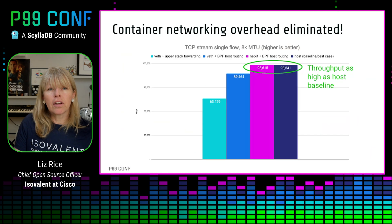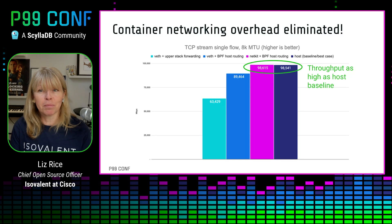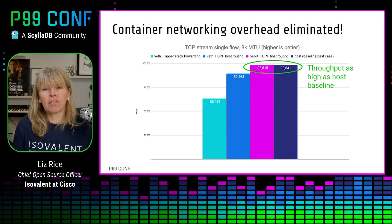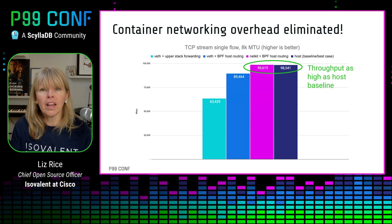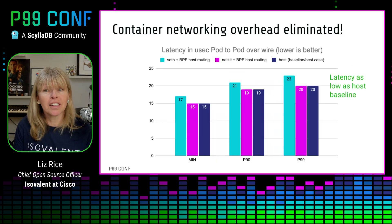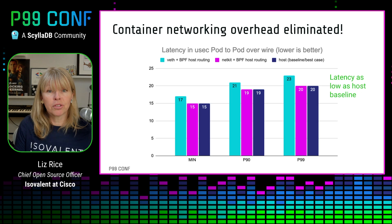If we look at the benchmark results — with no need to queue packets and no need to pass packets through that host upper networking stack — the results are clear. NetKit devices achieve the same throughput for containers as you'd get with native host networking. And the same story is true for latency. Essentially, we are seeing the same networking performance with NetKit as we do when we run applications directly on the host.